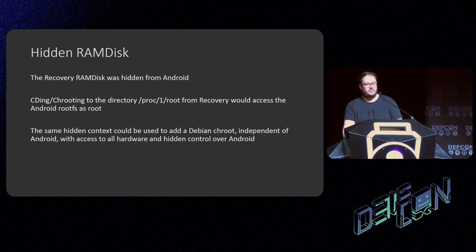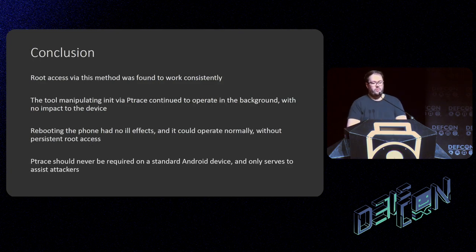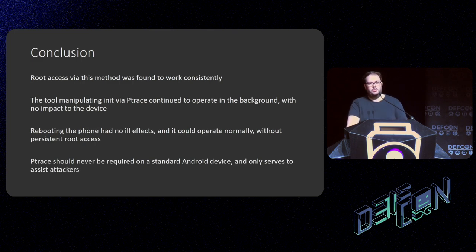Because it was hidden from Android, I could do a lot of interesting things accessing the hardware, but I could also access the rest of Android itself without Android knowing I was there. By cd-ing into `/proc/1/root` — the root filesystem the init process is using — recovery could access the Android root filesystem as root without Android knowing about it, which was fantastic. I decided to expand this out and add a whole Debian root filesystem to the device, giving me a lot of debugging and testing tools.